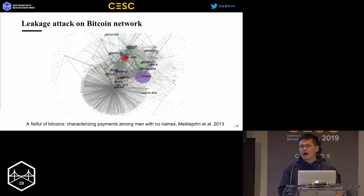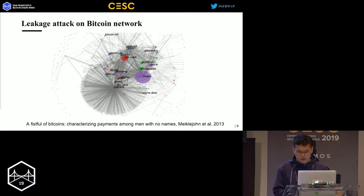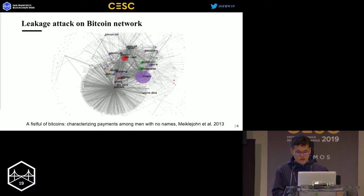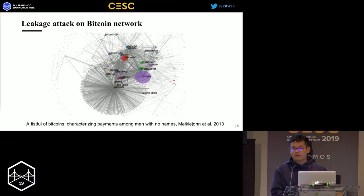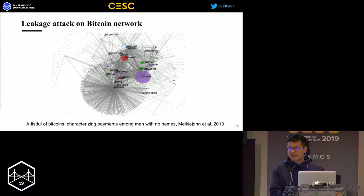For example, in this 2013 paper, they could build a visualization of the user network using the history of transactions in Bitcoin. In this graph, an edge appears when two nodes have at least 200 transactions between them. The area of each cluster represents the external income value — for example, the bitcoins received from other clusters or nodes. In fact, we want to hide this information from the blockchain.